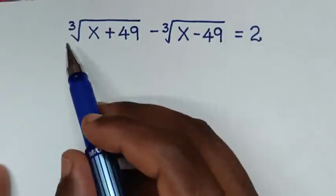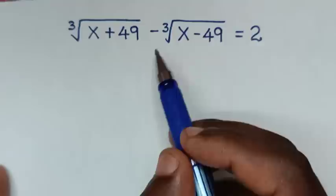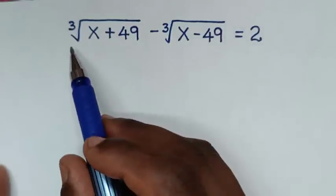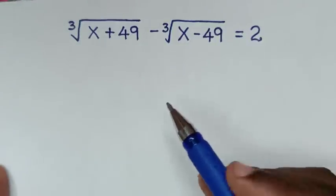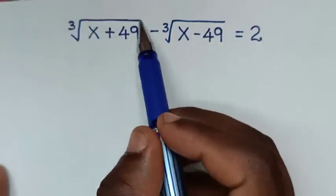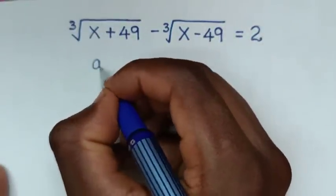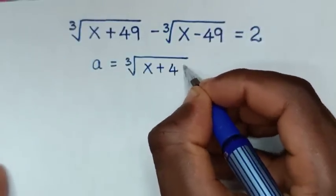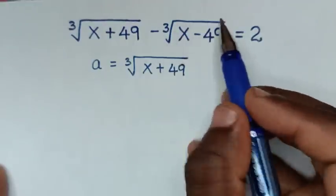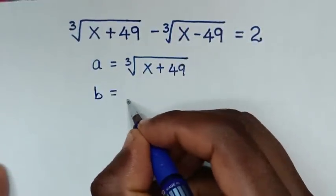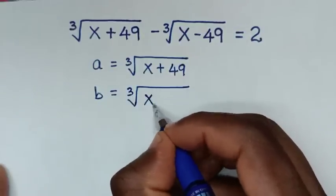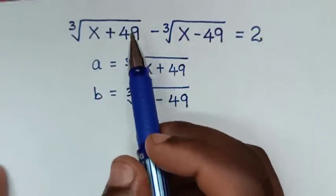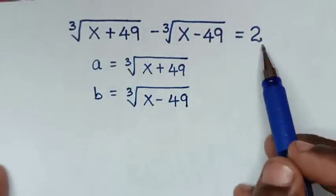Welcome. We are going to solve this math problem: cube root of (x + 49) minus cube root of (x - 49) is equal to 2, to find the values of x. In the first step, we let cube root of (x + 49) equal a, and cube root of (x - 49) equal b. Then, since we let this as a and this as b, it follows that a minus b is equal to 2.